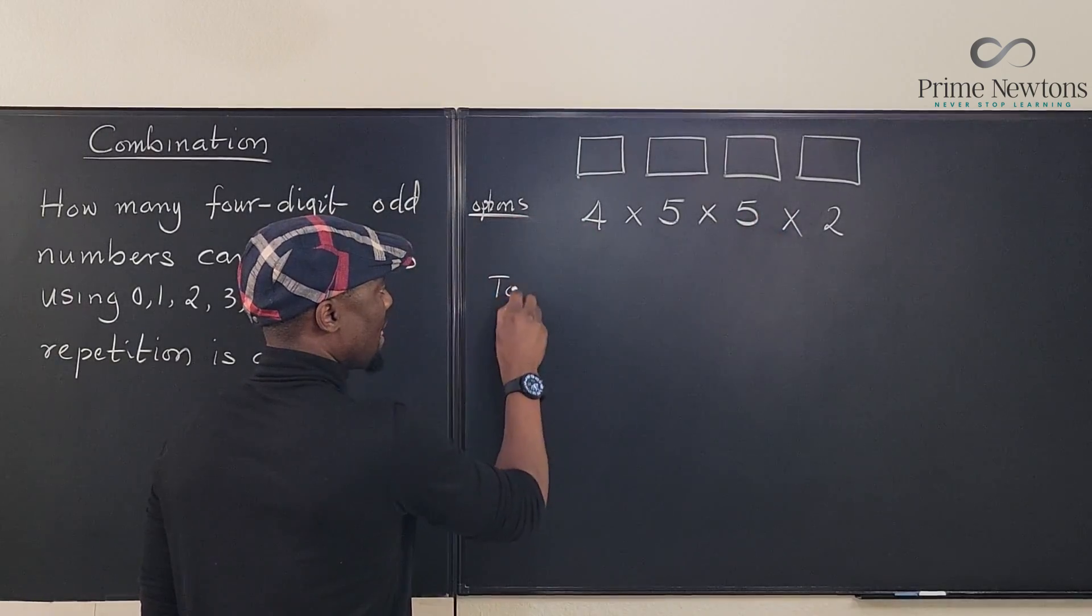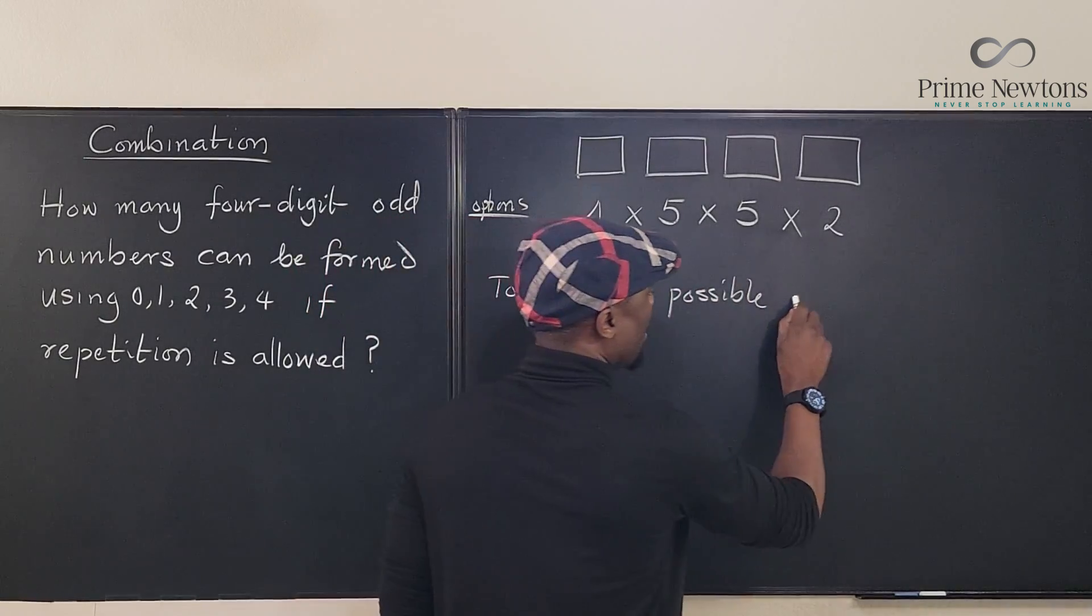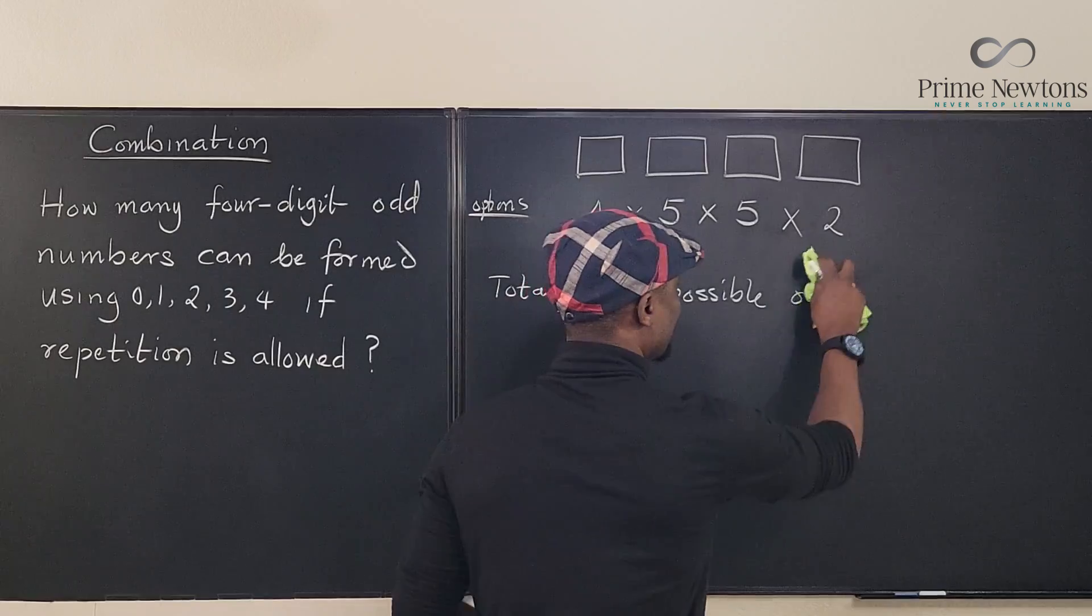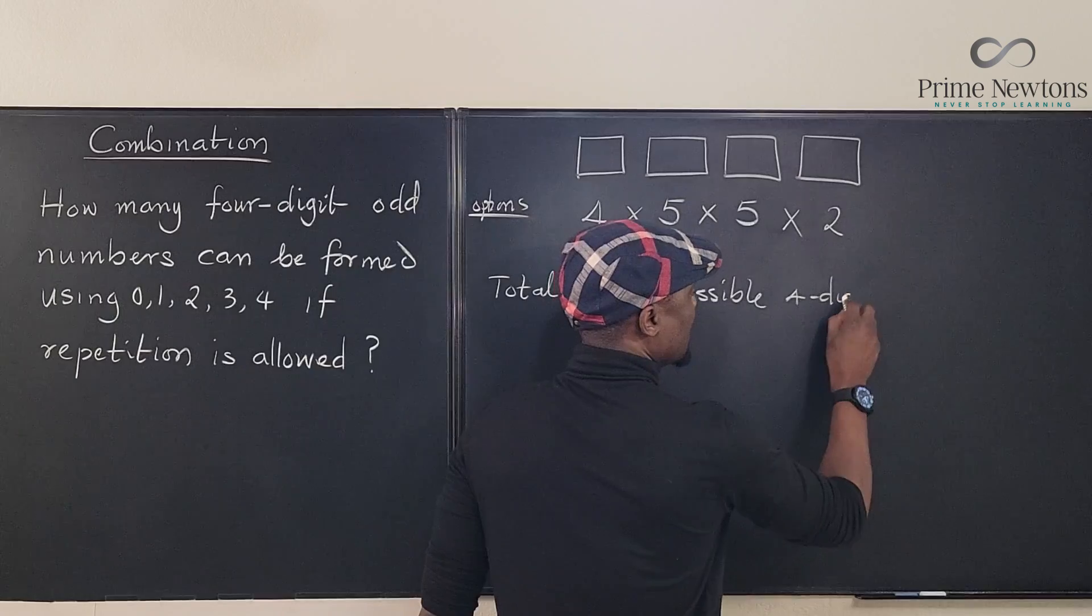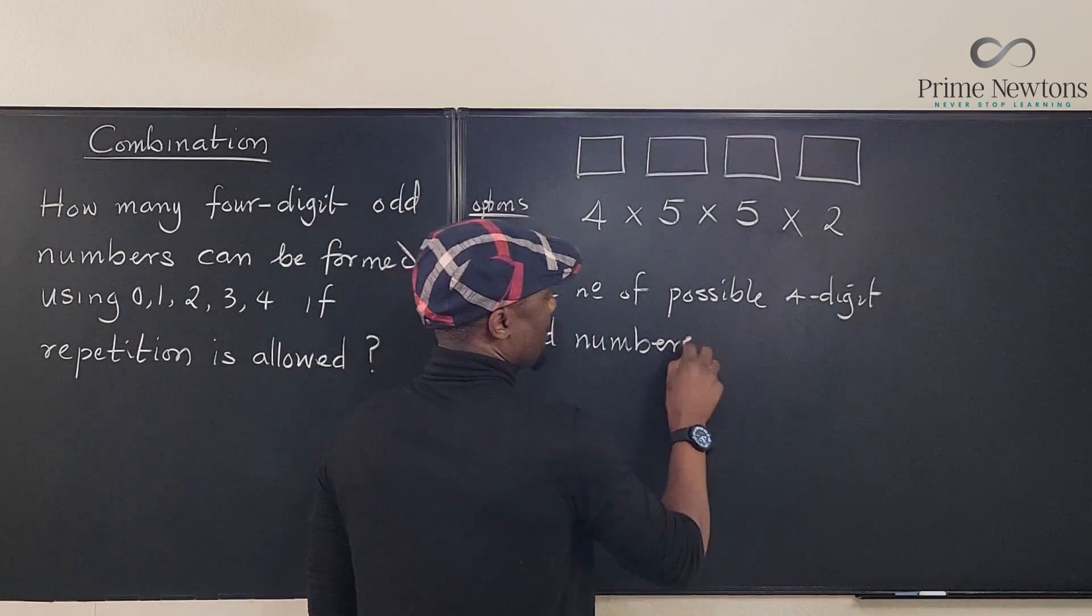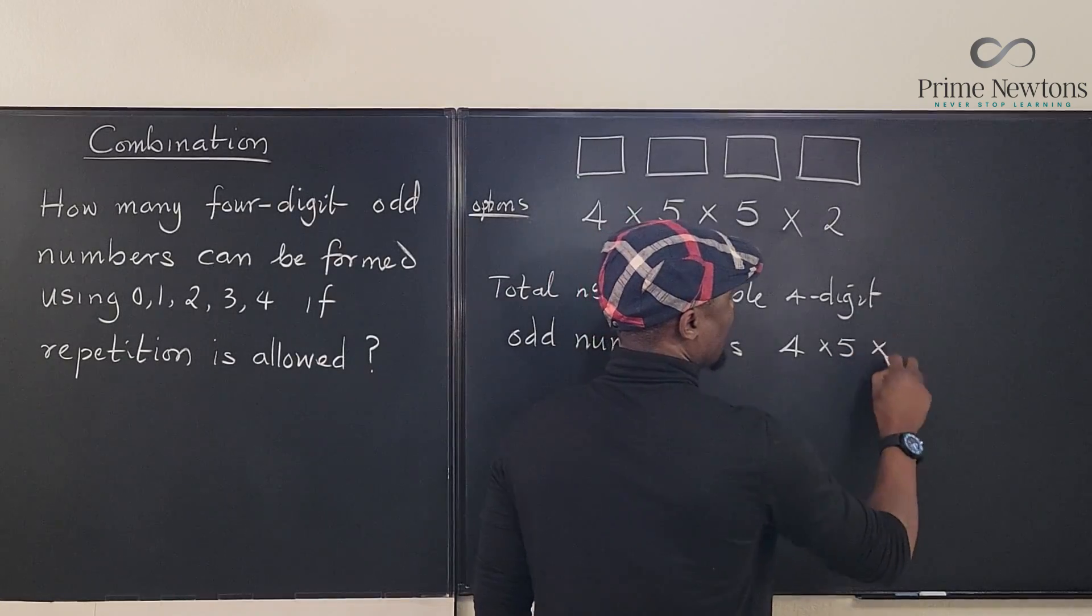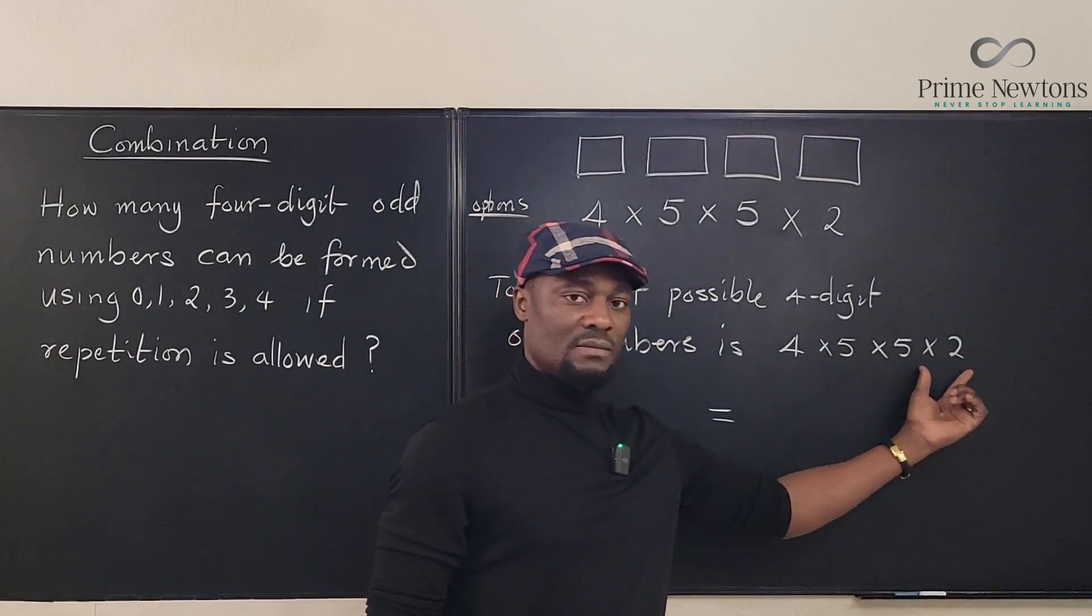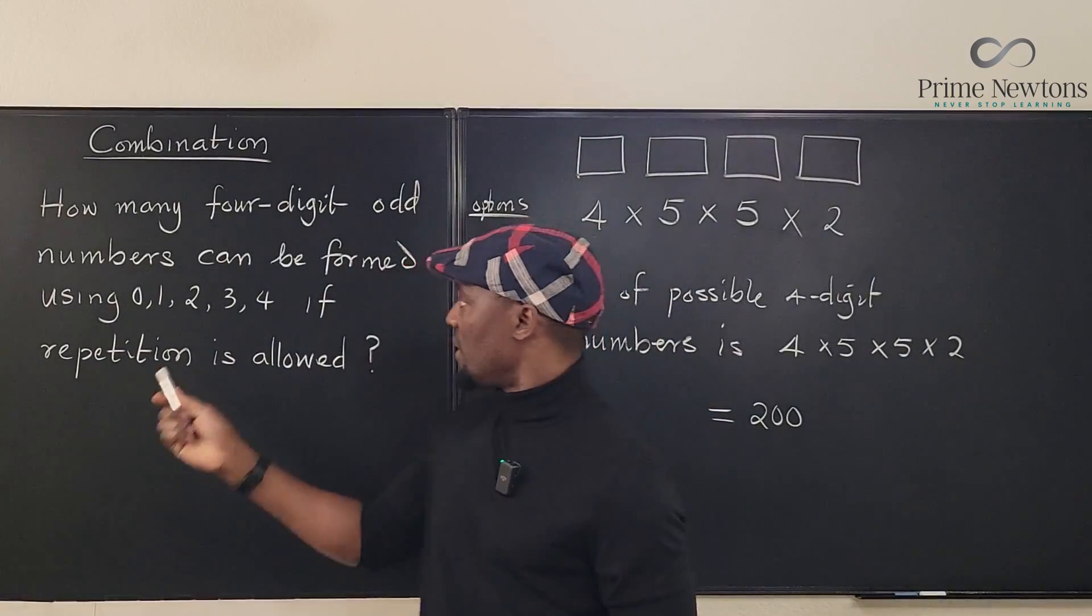So total number of possible four-digit odd numbers is 4 × 5 × 5 × 2, which is equal to... this is 20 × 10... 200. So you can actually generate 200 different numbers following this rule.